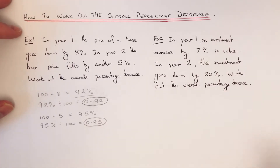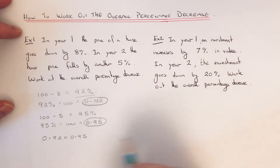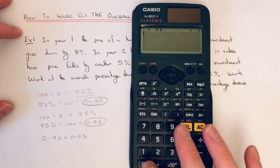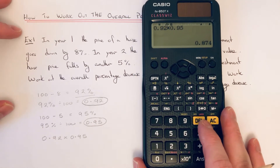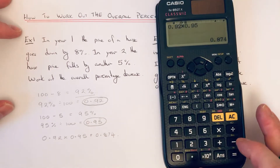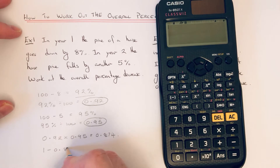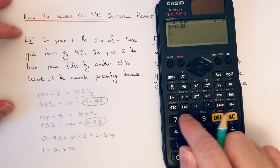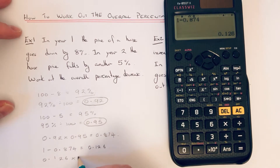To get our overall percentage decrease, we multiply these two together. So on the calculator: 0.92 times 0.95 gives us 0.874. We now convert this back into a percentage by taking this answer away from one, which gives us 0.126, then multiply by 100 to convert it into a percentage.